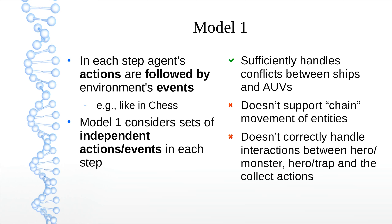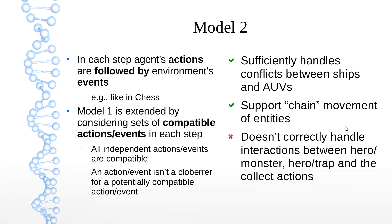This is not desirable behavior according to the domain specification. To deal with chain movements of entities, we extend the notion of action independence to action compatibility. All independent actions or events are compatible, but there is also another necessary condition: an action or event can be a global error, or invalidate a precondition for a potentially compatible action or event, and so might still be considered compatible.